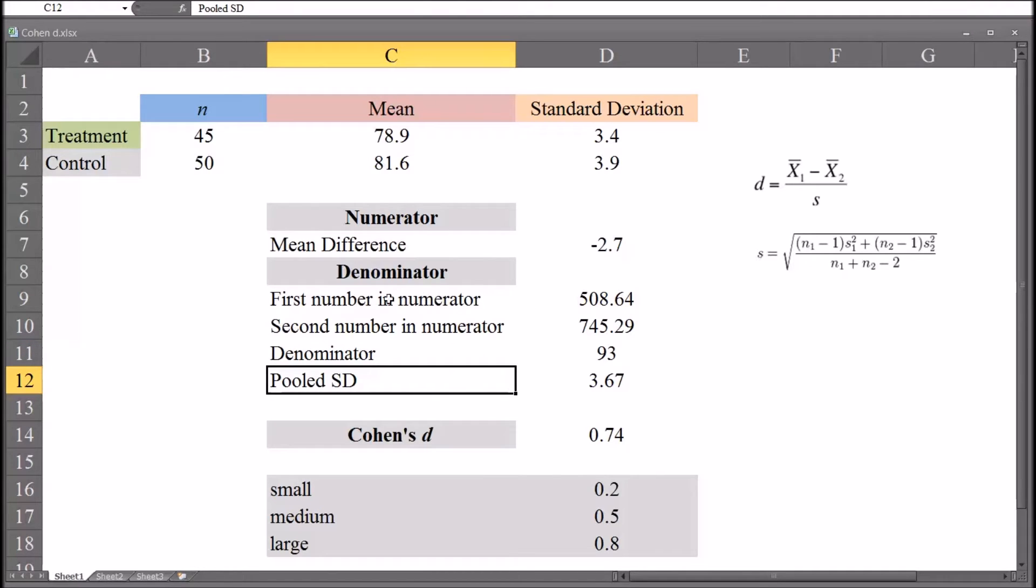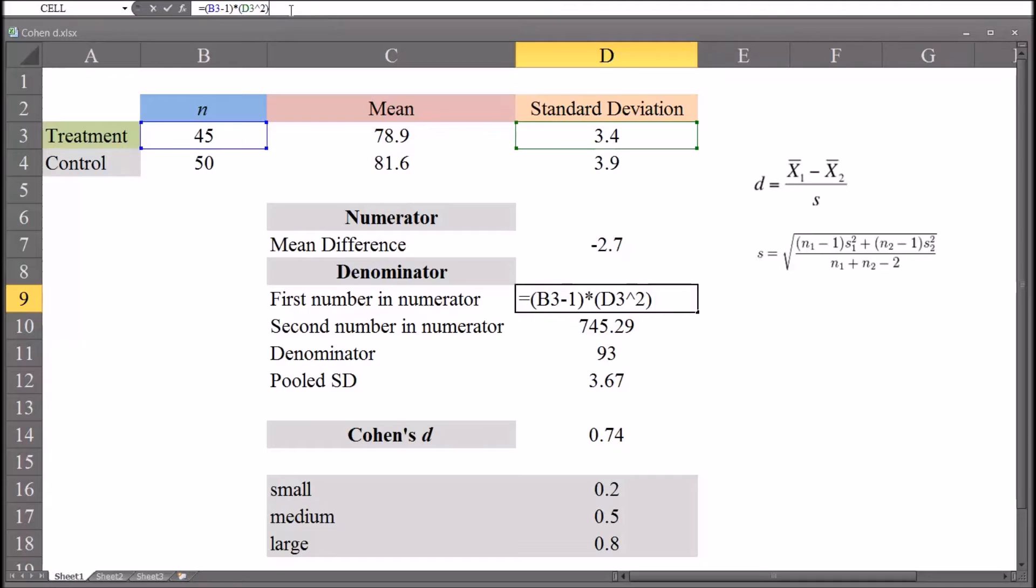First we'll look at the first number in the numerator. You can see from the function up top, it is the sample size for the treatment group minus 1 multiplied by the standard deviation squared. Which of course is consistent with the formula.